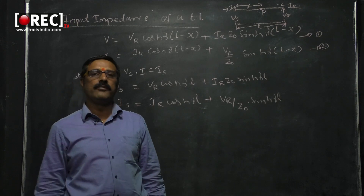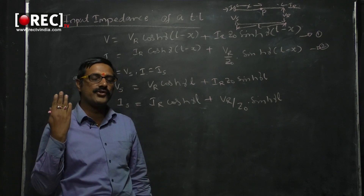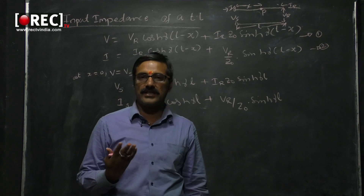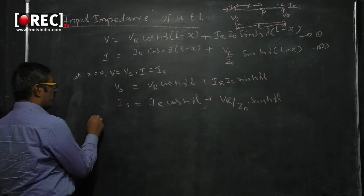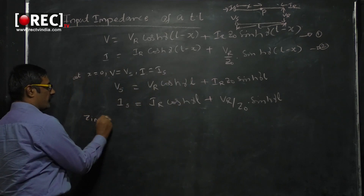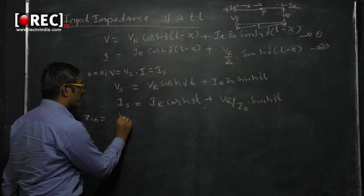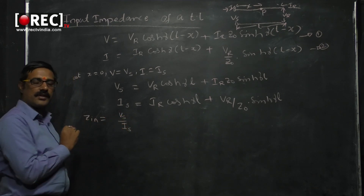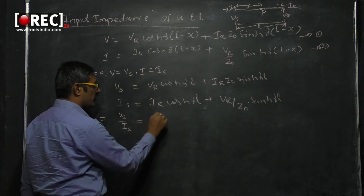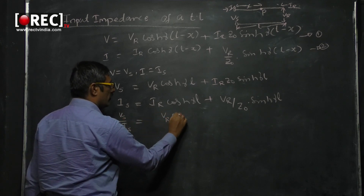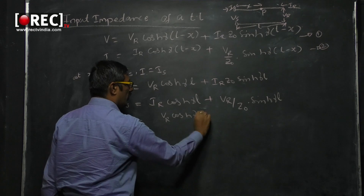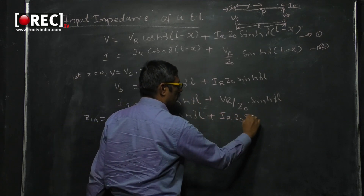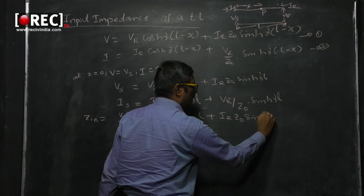Now what would be the source or input impedance? Impedance is the ratio of AC voltage to AC current, so Zin equals VS/IS, which gives VR cosh(γl) plus IR·Z₀ sinh(γl) divided by IR cosh(γl) plus VR/Z₀ sinh(γl).